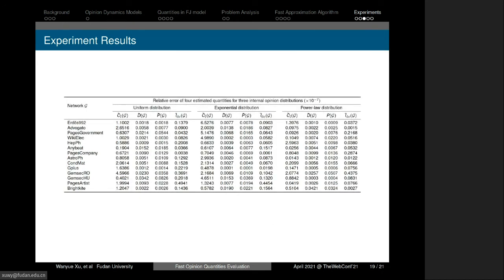Our approximation algorithm also has high accuracy. This table shows the approximate results compared with exact results. Here are the main relative errors of the four estimated quantities: internal conflict, disagreement, polarization, and controversy. We can find that the actual relative errors are negligible. All errors are less than 10 to the negative 7th power, much smaller than the proved theoretical guarantee.